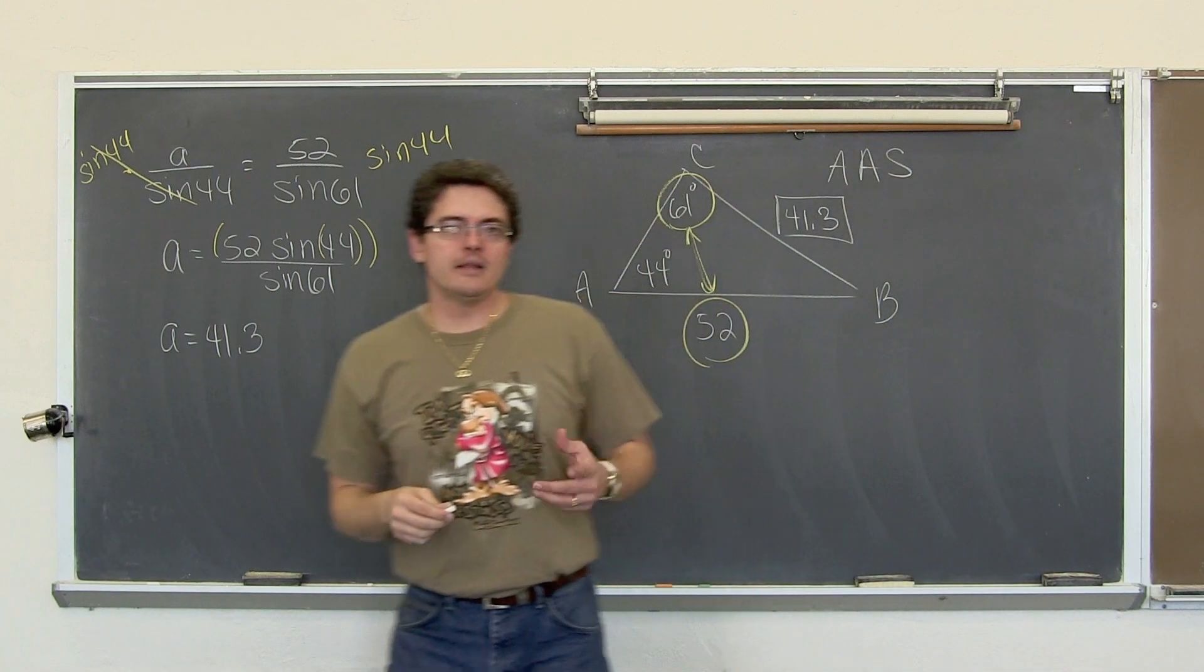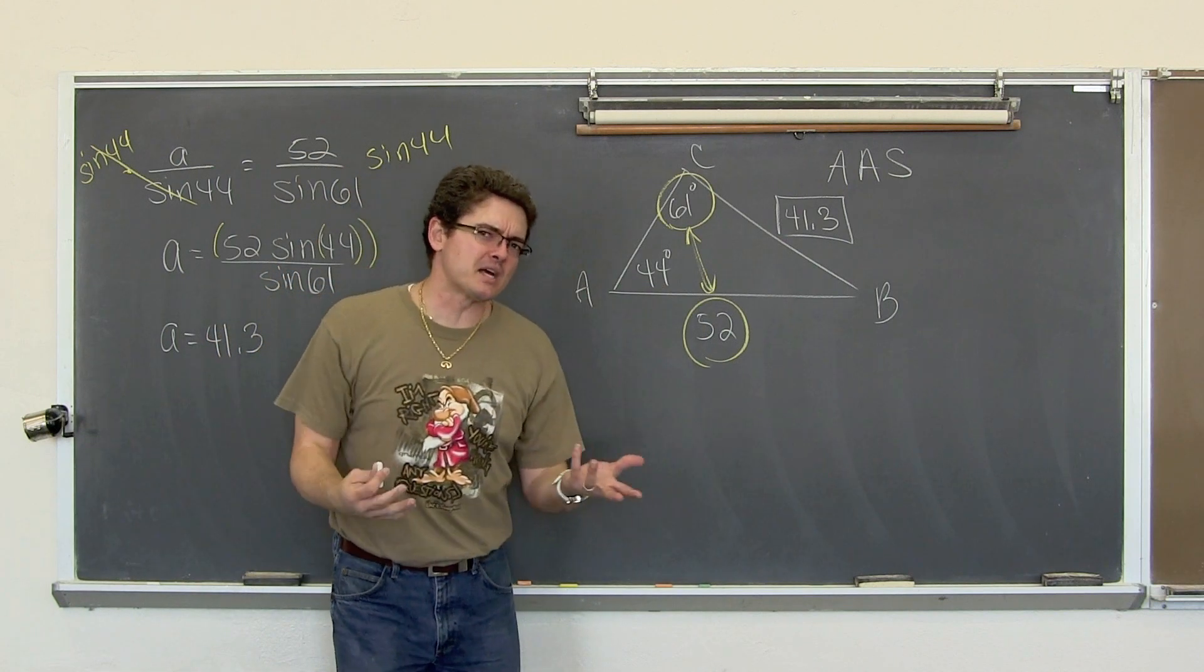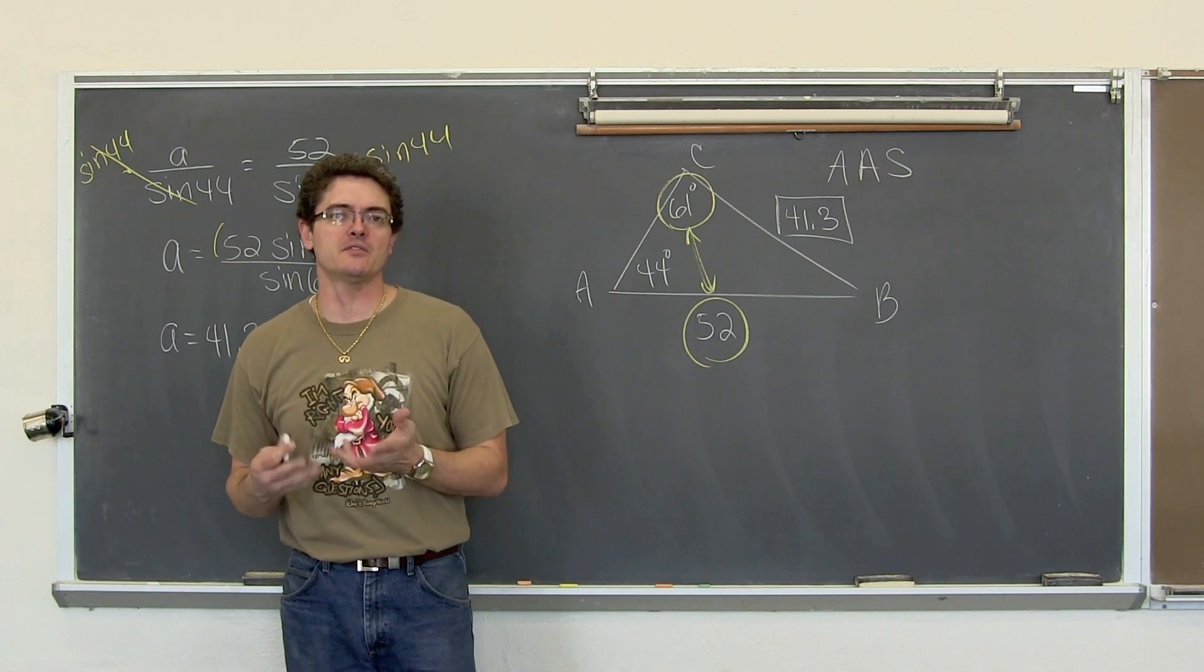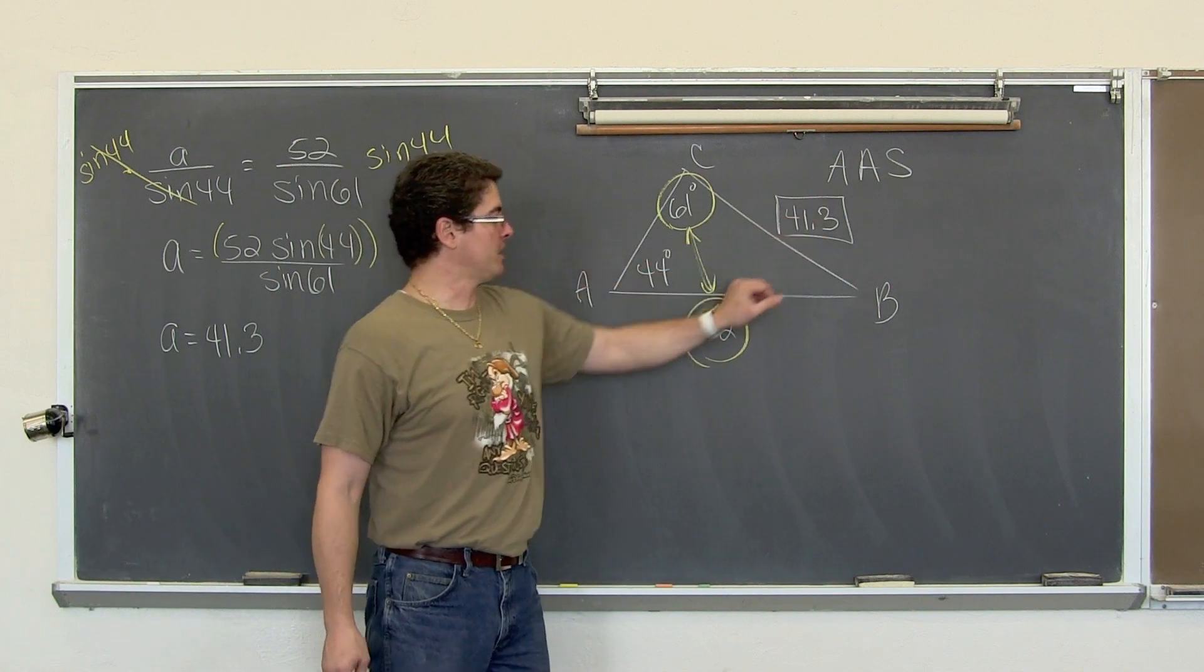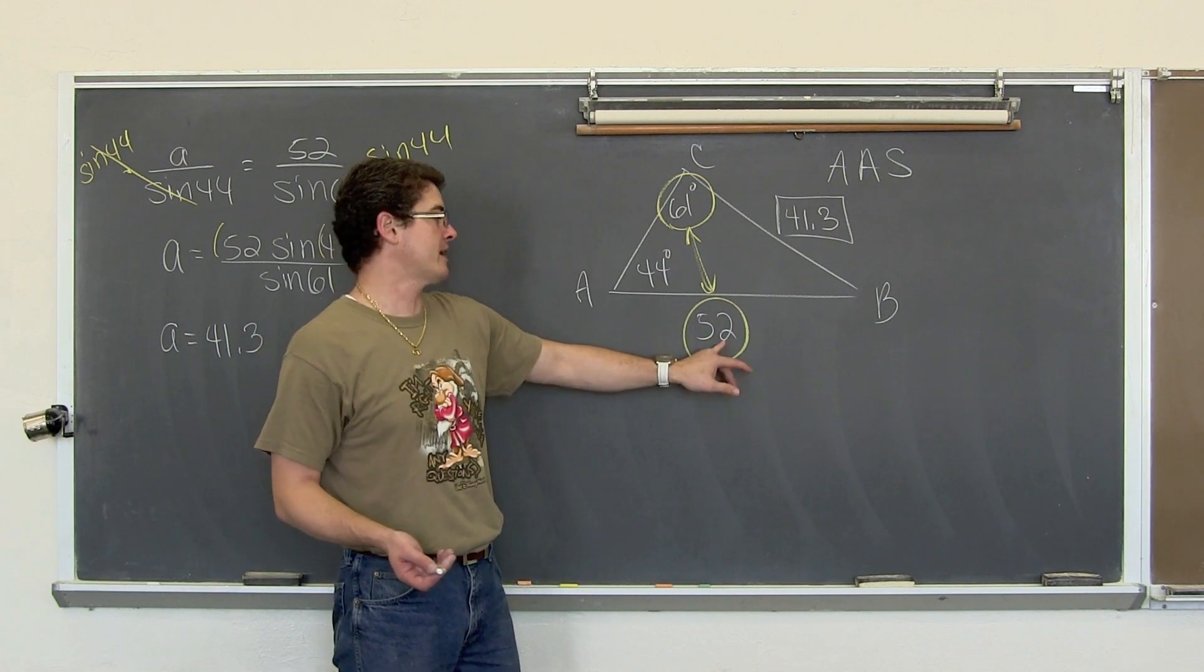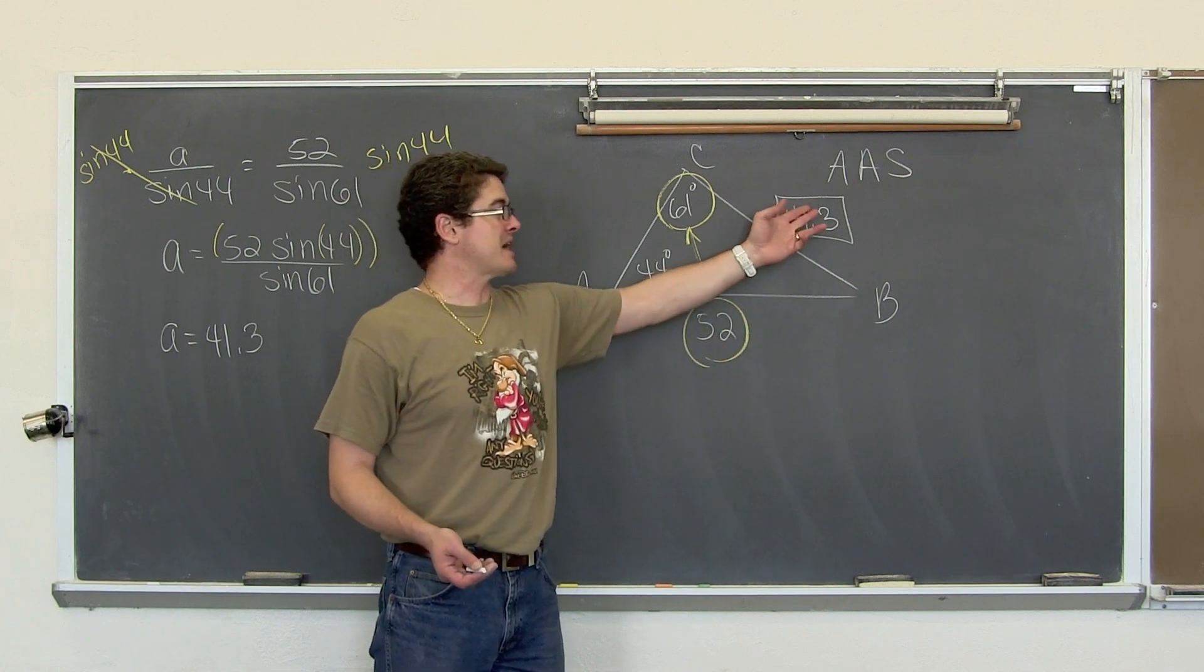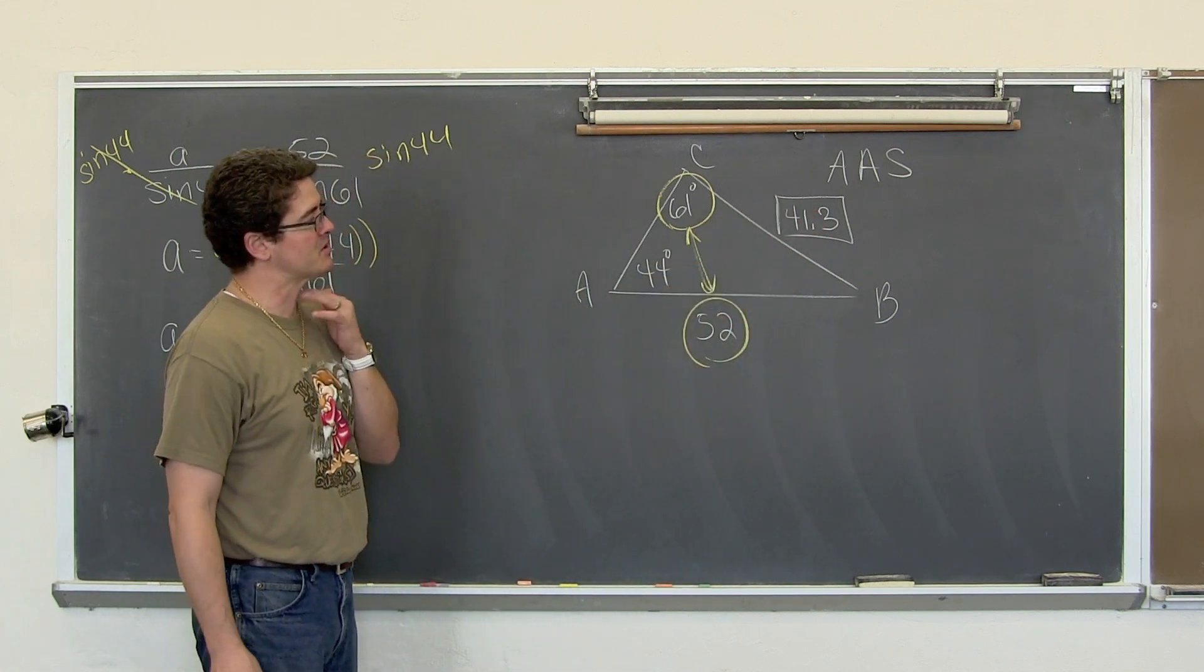So we have 52 times the sine of 44 divided by the sine of 61. If you are using a TI-83 or a TI-84, you want to wrap the 52 in parenthesis. When you type in sine, it is going to open up another parenthesis for you automatically. Close those two before you type in the division. If you get that in your calculator correctly, you are going to get a is equal to 41.3 units.